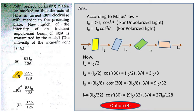After passing through the third polarizer: I₃ = (3I₀/8) cos²(30°). Applying the same calculation, the answer is 9I₀/32.